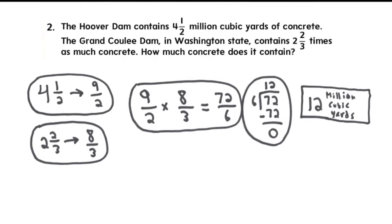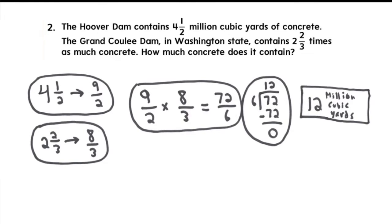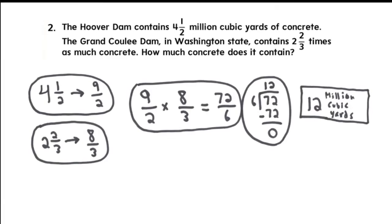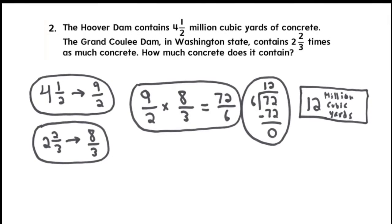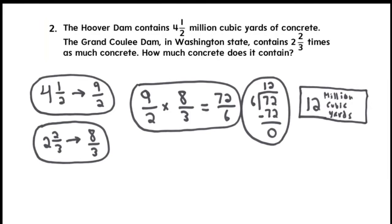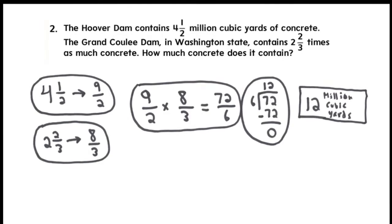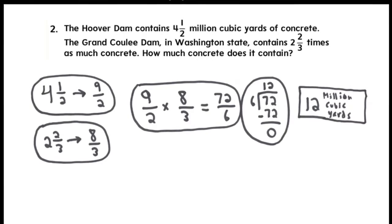6 goes into 72 twelve times. Here's the thing: when your remainder is 0, you don't actually continue going clockwise. You just stop right there. Your answer will just be 12, or in this case, 12 million cubic yards.